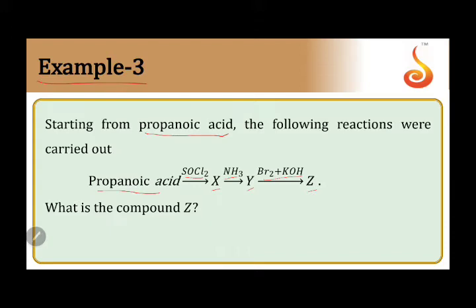Let us write the reaction. First, propanoic acid has 3 carbons in total with an acid group: CH3CH2COOH. This is propanoic acid.